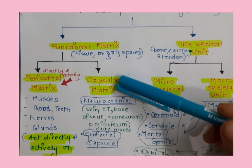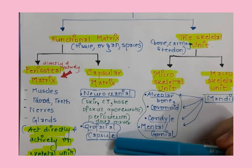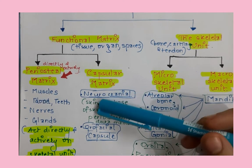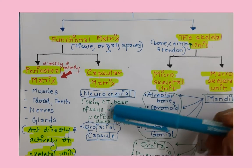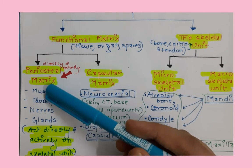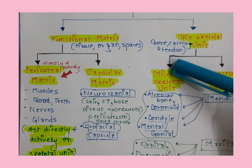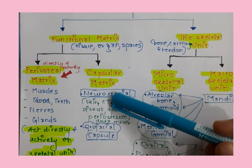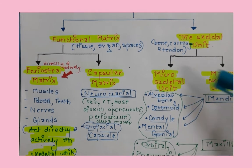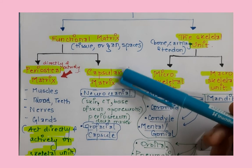Now the capsular matrix. There are two capsules: the neurocranial and orofacial capsules. The neurocranial capsule includes the skin, connective tissue, base of skull, aponeurosis, periosteum, and two layers of dura mater. The periosteal matrix influences the microskeletal units, while the capsular matrix influences the macroskeletal units.